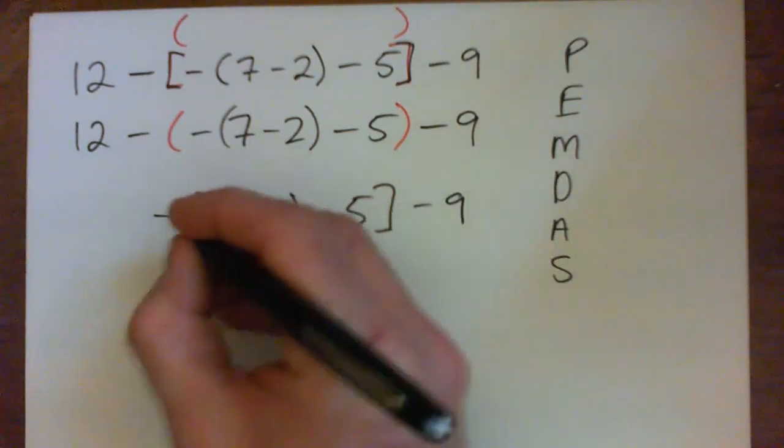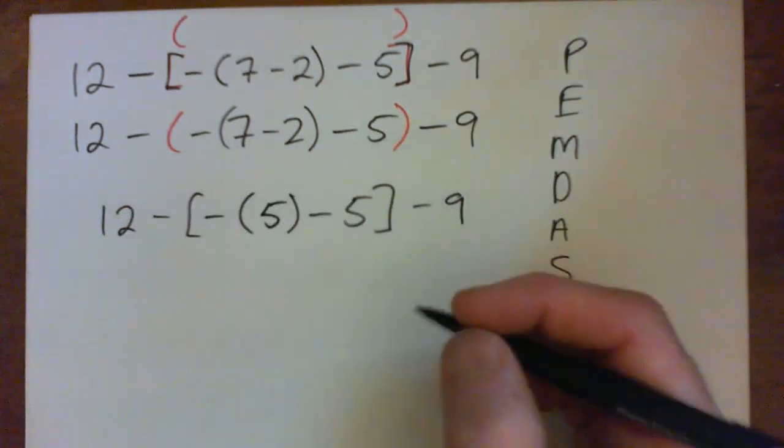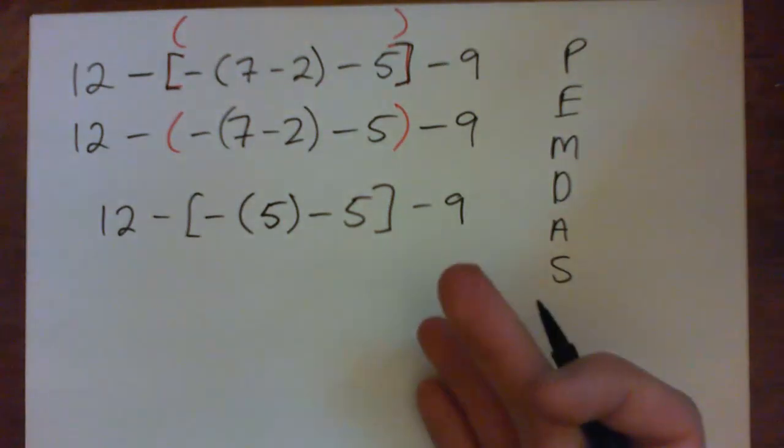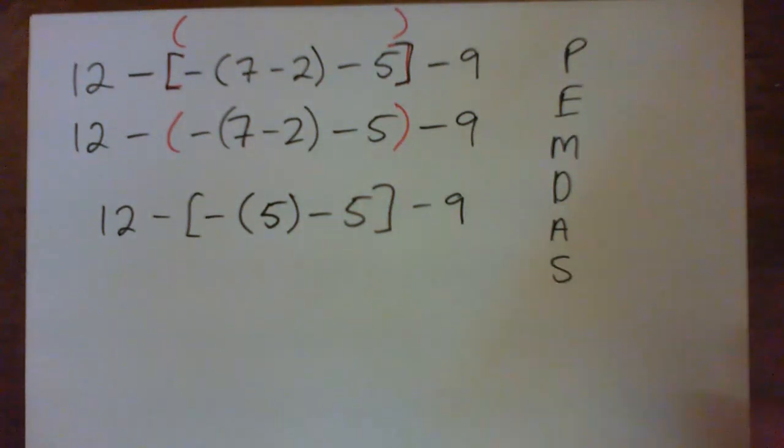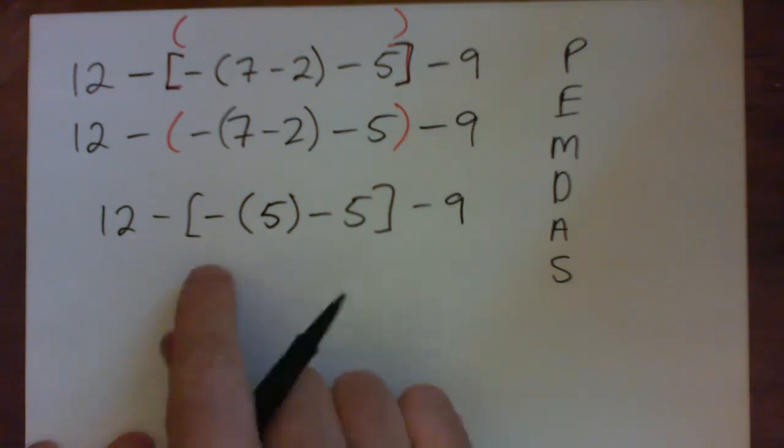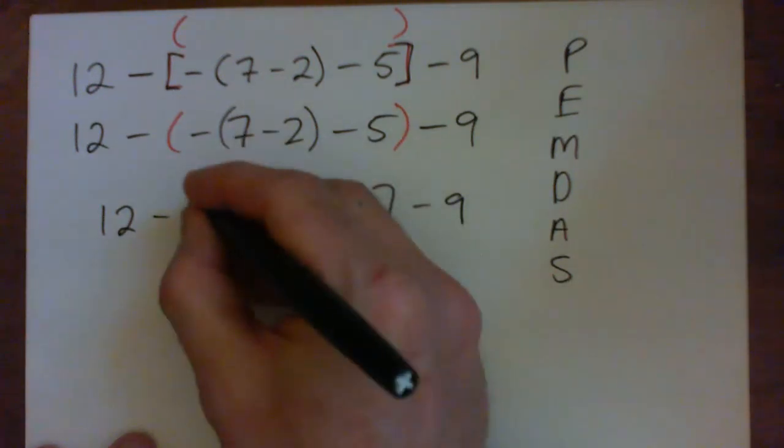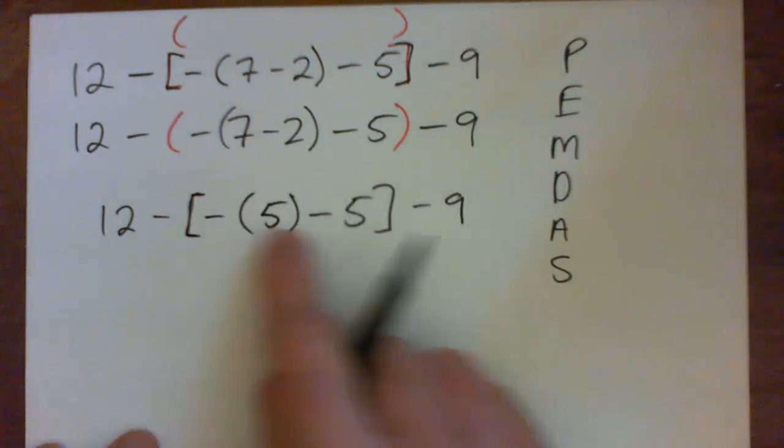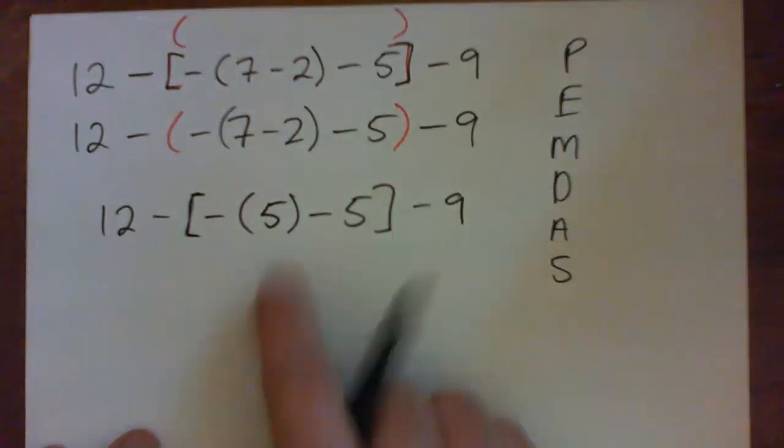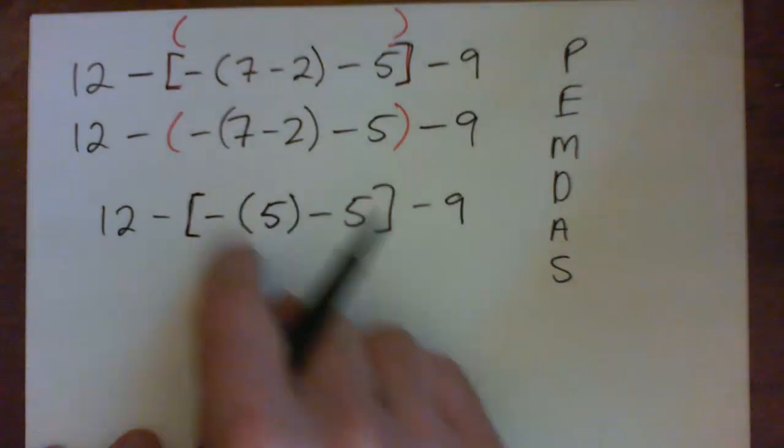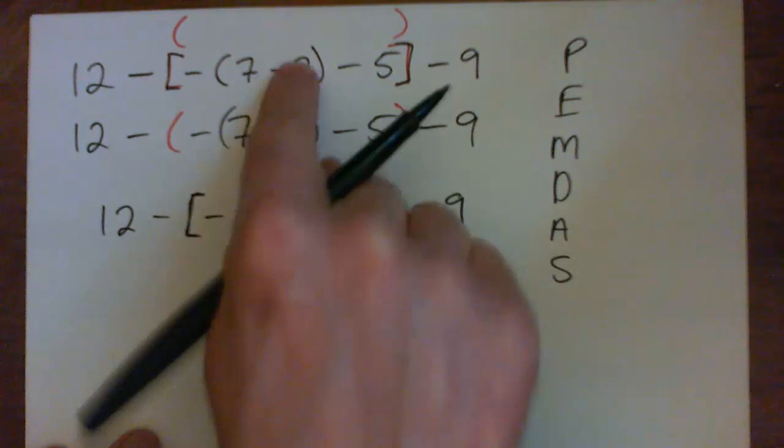Write everything, just take one step at a time, because the problem with math is if you make one mistake you're wrong and you'll get no points. Well, you might get a little bit of points, but anyway you'll be wrong on the problem. So in the square bracket we have negative 5 minus 5, and this parentheses doesn't mean anything anymore. We've taken care of it. 7 minus 2 gave 5, that's taken care of.